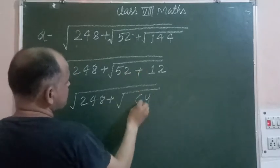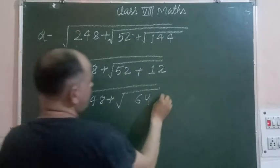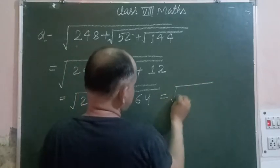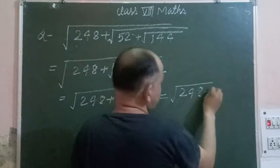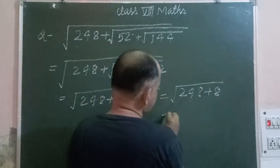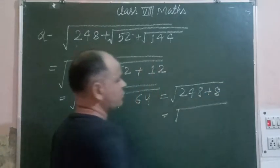Now we take the square root of 64, which is 8. So this becomes 248 plus 8, which is 256. The square root of 256 is 16.